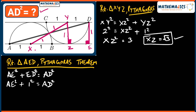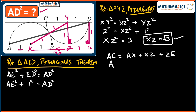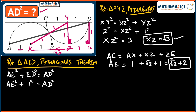Let's mark XZ = √3 in the figure. Now, ZE is 1 (from the small rectangle YDEZ), and AX is also the radius = 1. Using these: AE = AX + XZ + ZE = 1 + √3 + 1 = √3 + 2. Let's keep this in mind because we will be using this value.